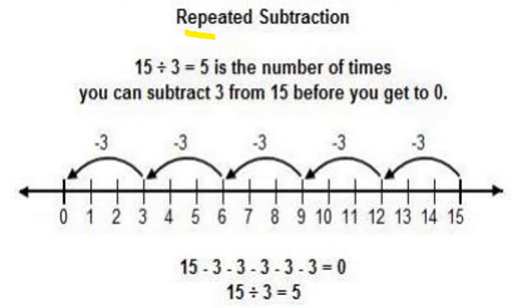Just as repeated addition is known as multiplication, repeated subtraction is known as division. Division is called repeated subtraction. Here the example is 15 divided by 3 equals 5 — meaning 5 is the number of times you can subtract 3 from 15 before you reach 0.